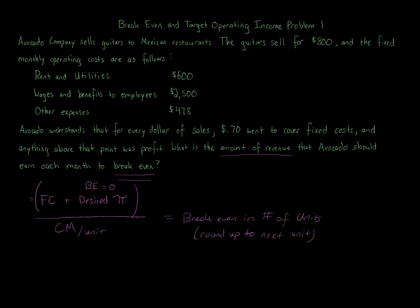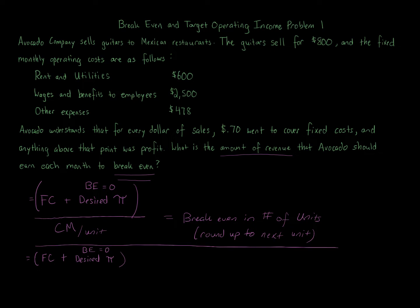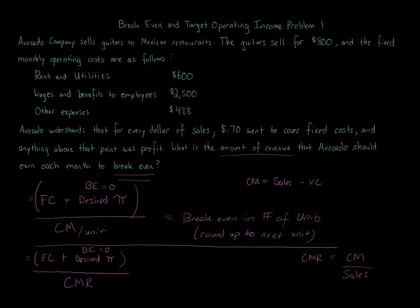This question is asking for the amount of revenue to break even. We start with the same formula, but the denominator is different. It's still fixed costs plus desired profit — which equals zero for break even — but we divide by the contribution margin ratio. The contribution margin ratio equals contribution margin over sales, and contribution margin is sales minus variable costs.